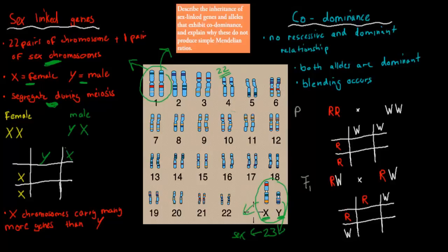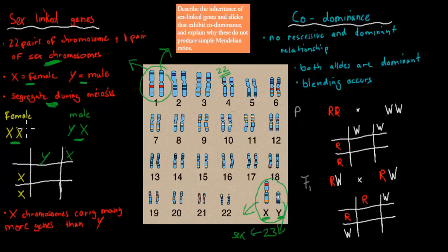They're segregating during meiosis when gametes are being formed. If a female were to be crossed with a male, you have the two different combinations. We have XX, which means the person is female. Whereas if there's an X and a Y, then the person is male.